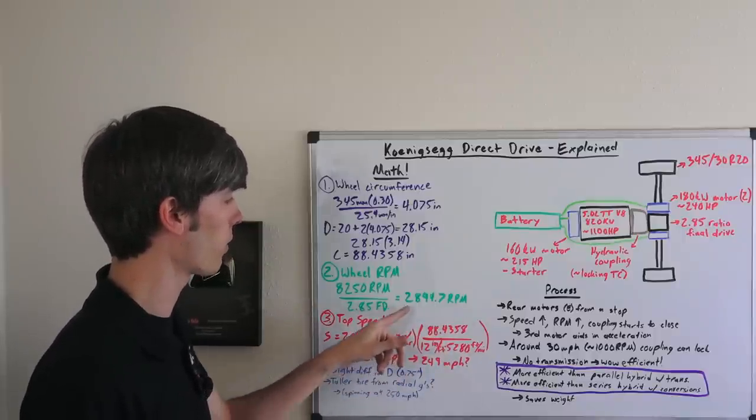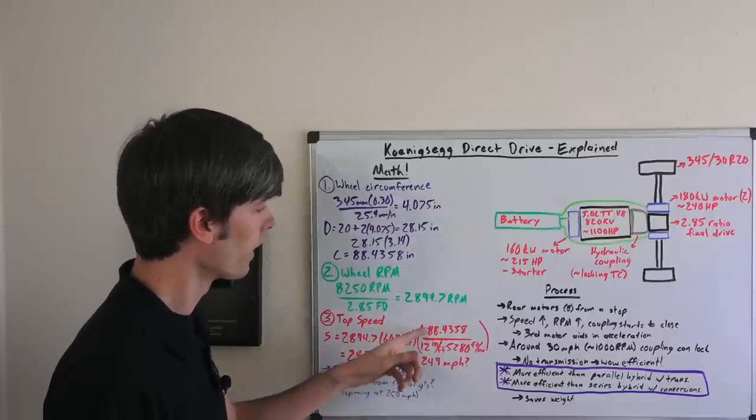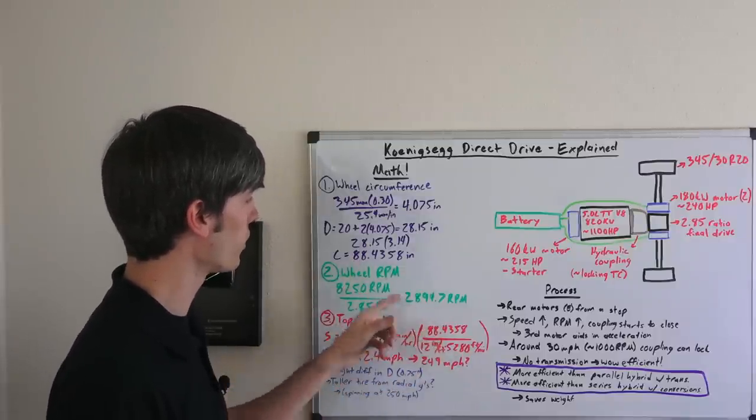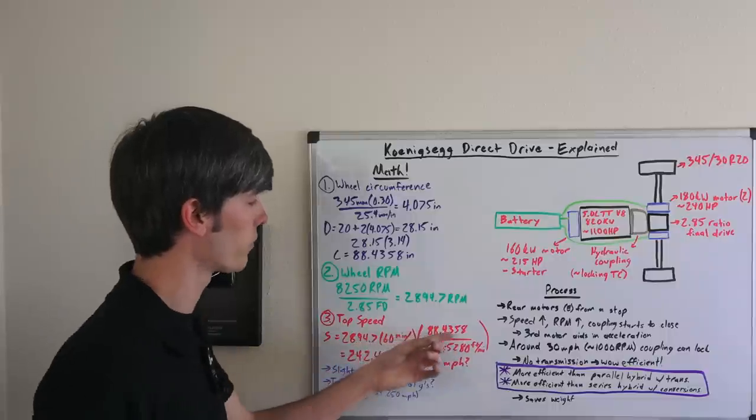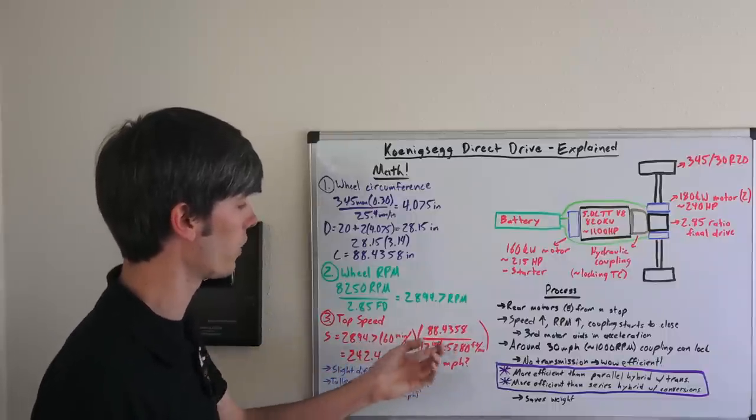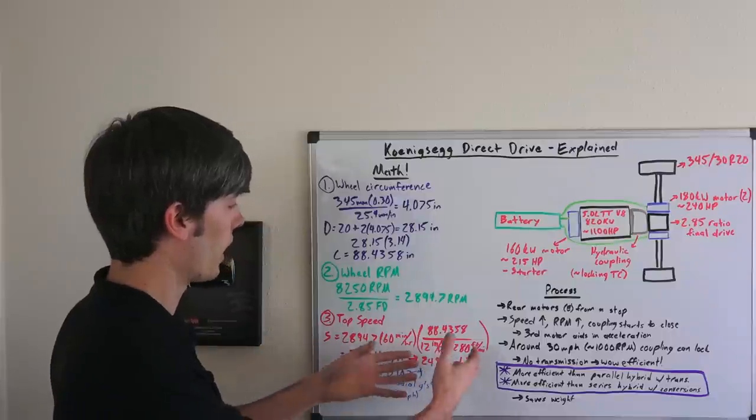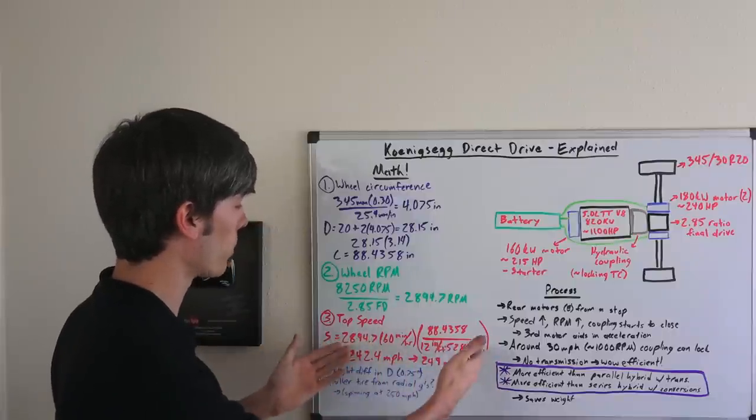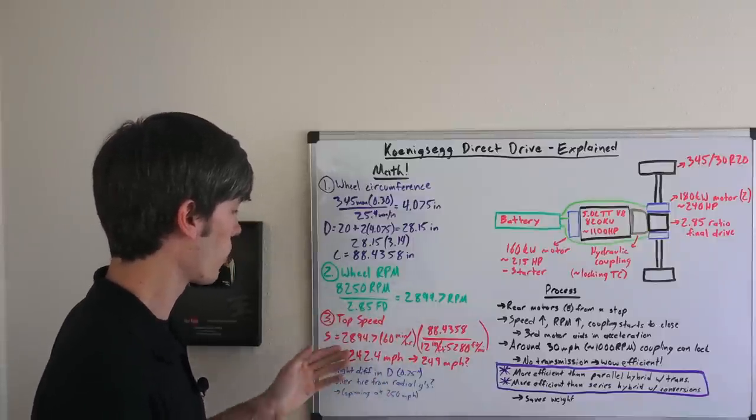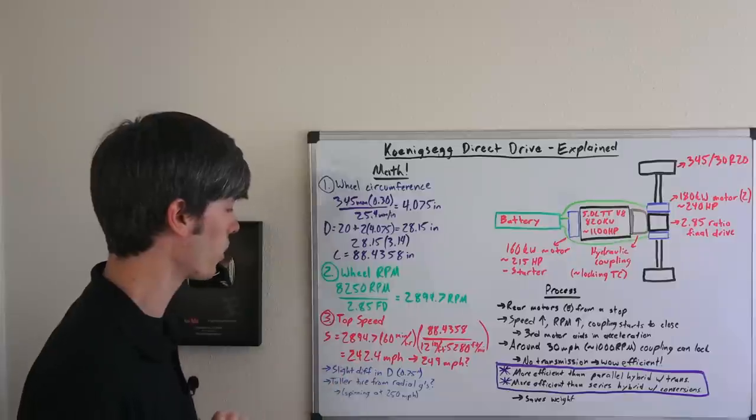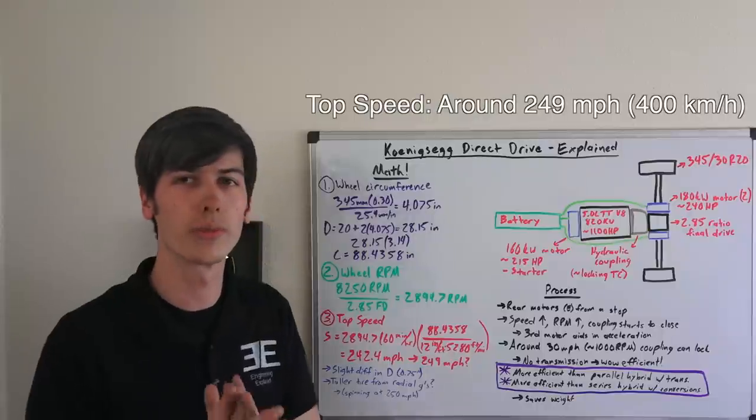...multiplied by 60 minutes in an hour, that way we'll get revolutions per hour rather than revolutions per minute. Then we're multiplying that by the number of inches the distance this wheel travels with one revolution, its circumference. So 88.4358 divided by 12 inches in a foot multiplied by 5,280 feet in a mile, so that will give us miles per hour once we multiply this all out rather than these inches per minute. So we have a final speed calculated from this of 242.4 miles per hour. So why isn't that 249 miles per hour?